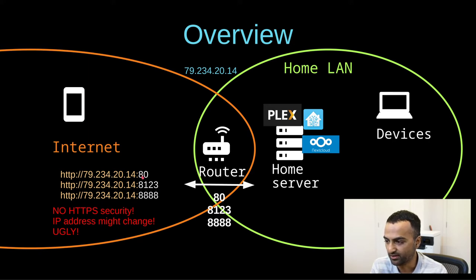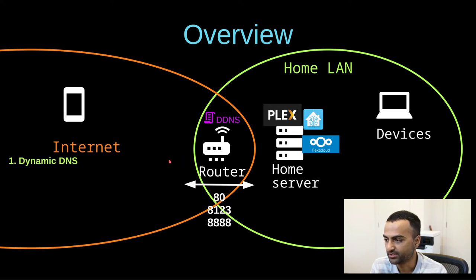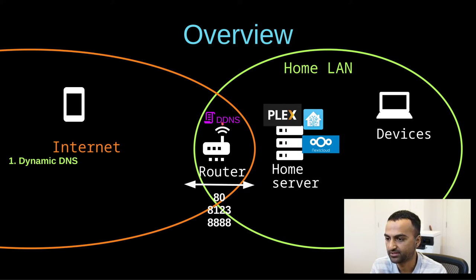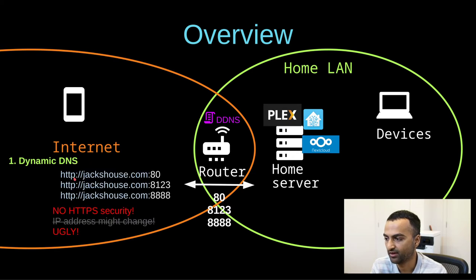So is there a better way to do this, just like other websites do with a friendly URL? One way is to use a dynamic DNS. This involves creating an account with a dynamic DNS provider and setting up a script or a setting on your router if it supports DDNS, or installing the same script on your home server. This would send updates whenever your IP address changes, so the URL always points to your IP address even when it changes.